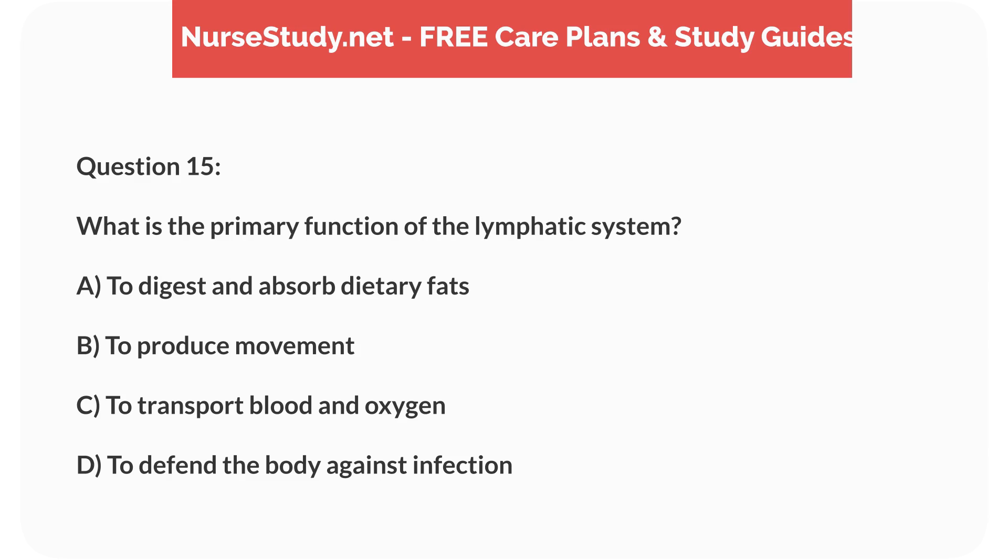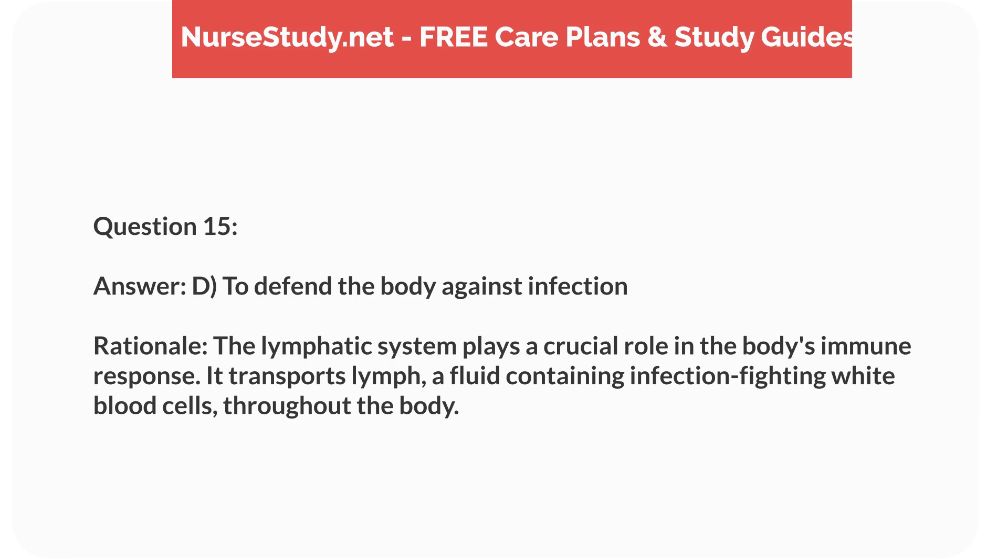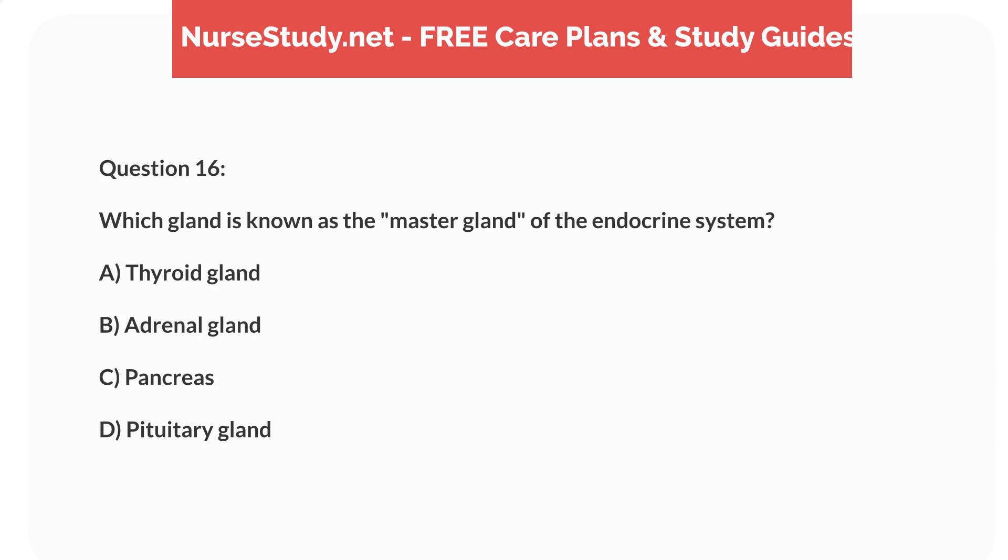Answer: D, to defend the body against infection. Rationale: The lymphatic system plays a crucial role in the body's immune response. It transports lymph, a fluid containing infection-fighting white blood cells, throughout the body. Question 16: Which gland is known as the master gland of the endocrine system? A) thyroid gland, B) adrenal gland, C) pancreas, D) pituitary gland.